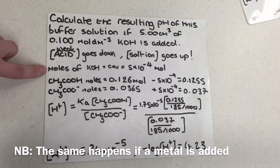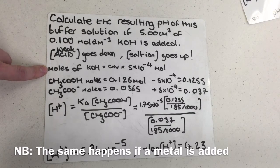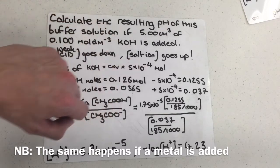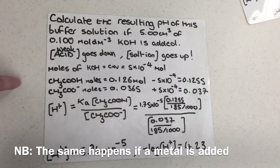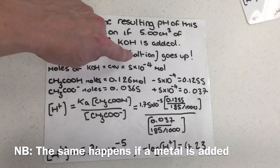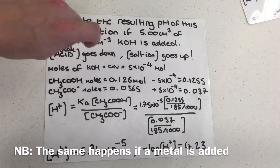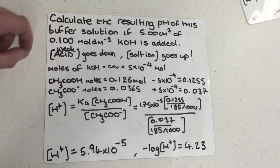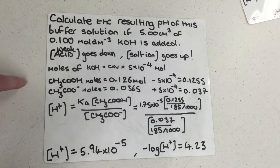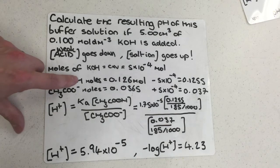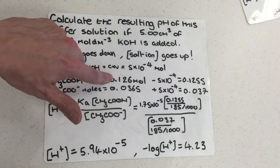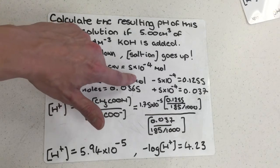First, I need to find how many moles of KOH I'm adding, since things react in molar quantities. I'm adding 5 × 10⁻⁴ moles. I expect the weak acid concentration to go down and the salt ion concentration to go up, but I have to determine what the moles change by first. My CH3COOH moles are 0.126 mol, calculated using moles equals concentration times volume from the previous part of the question.